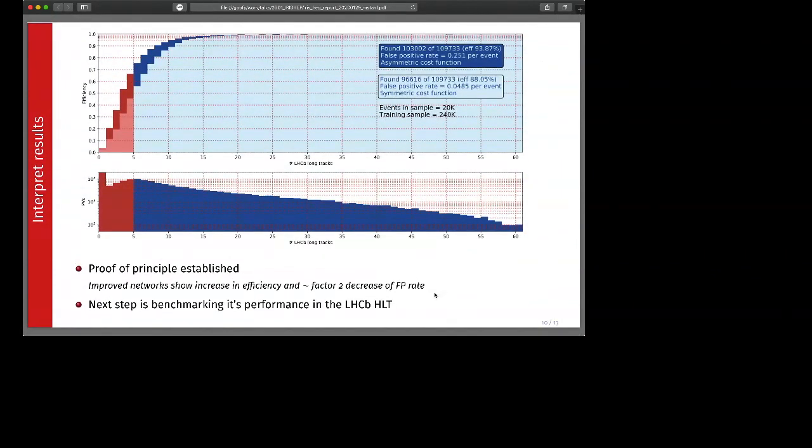Coming to results, the standalone PV Finder, you can see here that we found quite large efficiencies up to five PVs per event with the asymmetric cost function. Newer networks show an increase in efficiency and about two degrees false positive. This is just to show that the proof of principle is established.